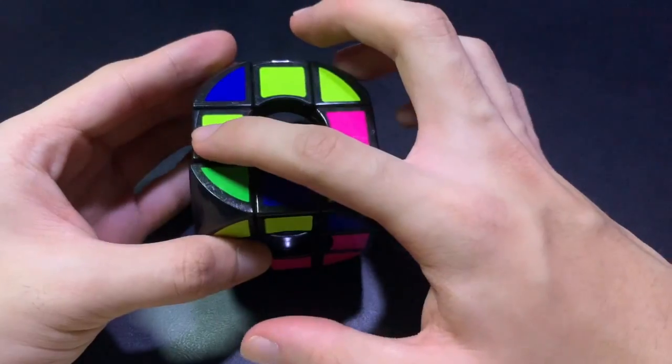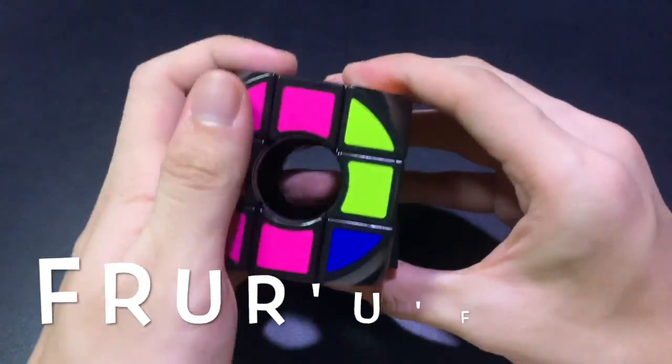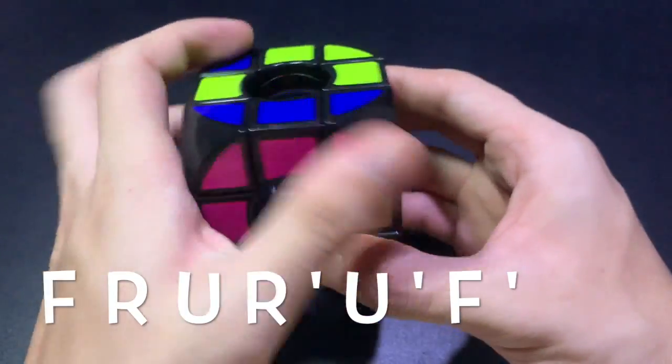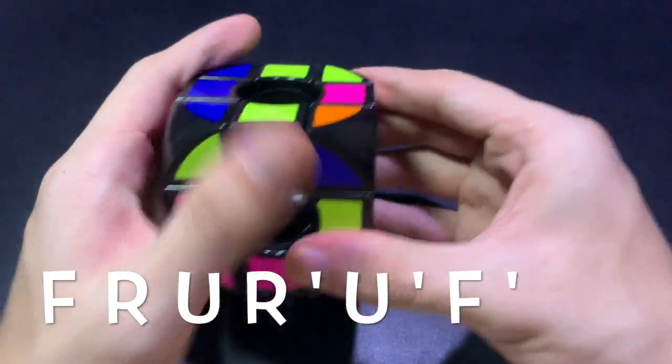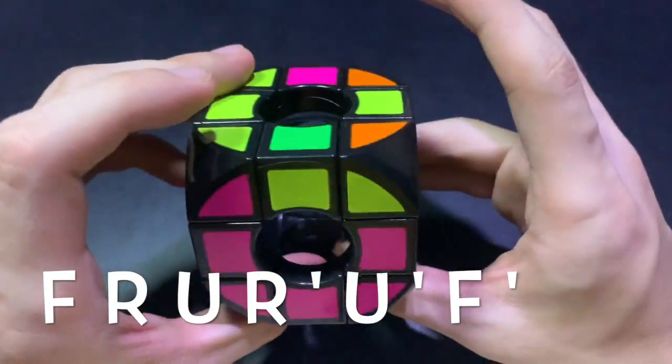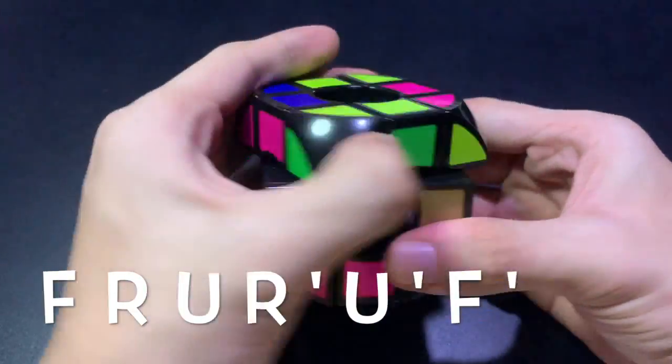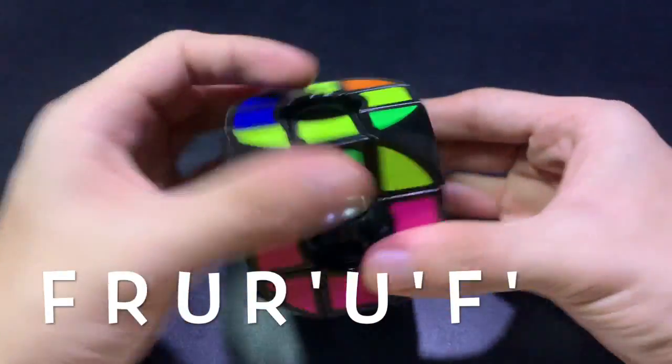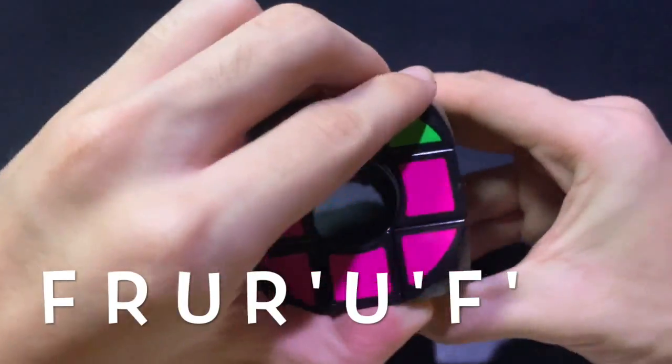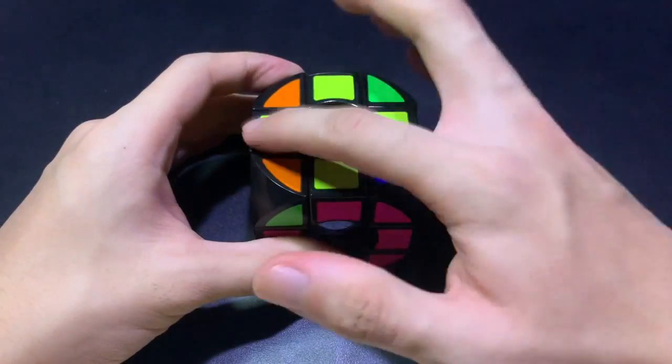So now you're on the opposite side. And this has to be j. There's f, r, u, r prime, u prime, f prime. And then you have to do it again. That's f, r, u, r prime, u prime, and finally f prime. So now you have the cross.